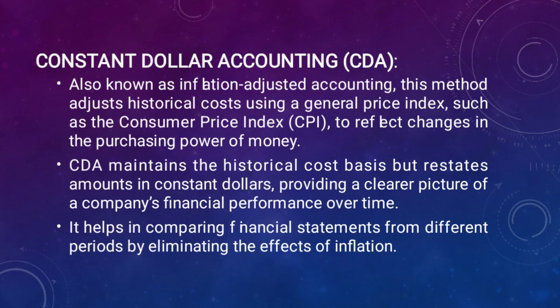For example, consider a company that purchased a piece of machinery for one lakh five years ago when the price index was 120. If the current price index is 150, the machinery's adjusted cost would be calculated as: Adjusted cost = (Current price index / Historic price index) × Historical cost, which gives 1,25,000. This adjustment reflects the current value of the machinery in today's dollars.